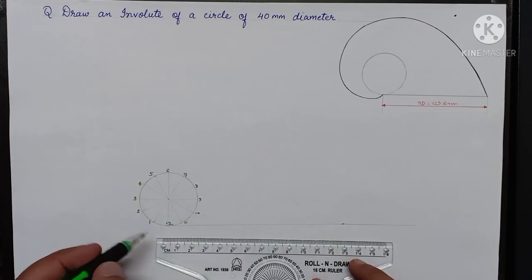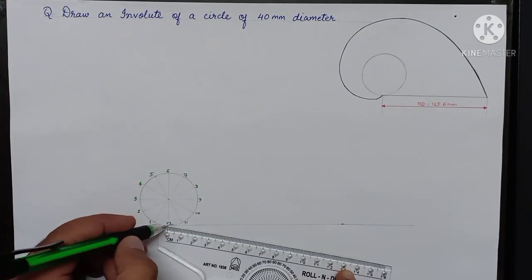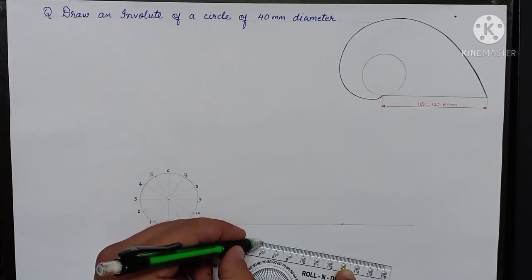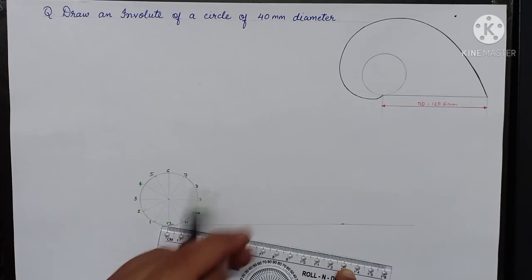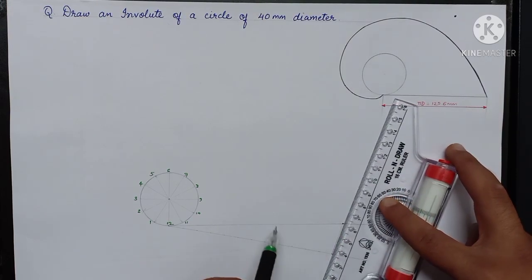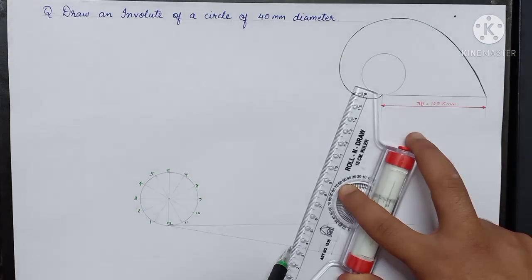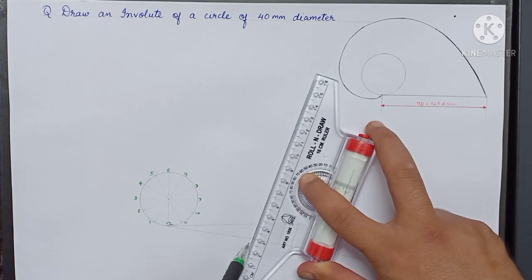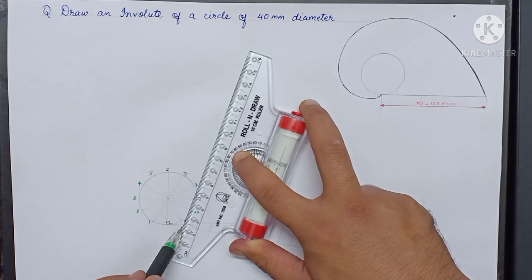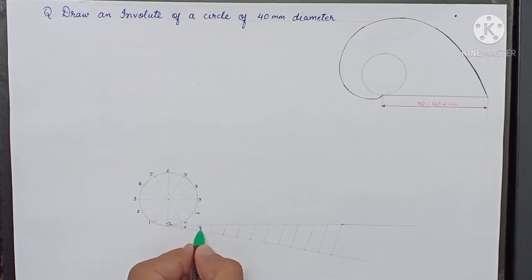Now we divide this line into 12 equal parts. For this, we draw an inclined line at any angle and mark 12 points at every 10 millimeter. Connect the last point with the end point of this line, then draw parallel lines from each point. We get the line divided into 12 equal parts, naming them as one dash, two dash, and so on.